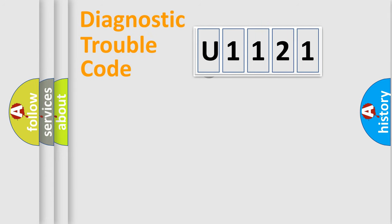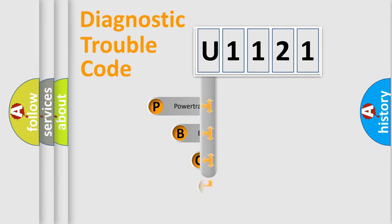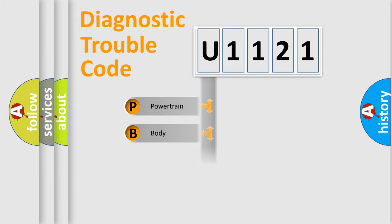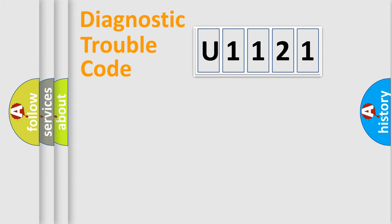Let's look at the history of diagnostic fault code composition according to the OBD-2 protocol, which is unified for all automakers since 2000. We divide the electric system of the automobile into four basic units: Powertrain, Body, Chassis, and Network.